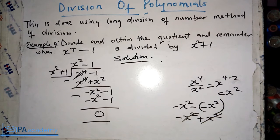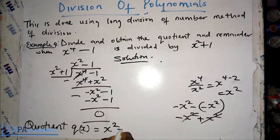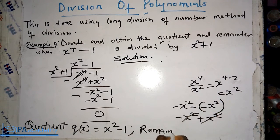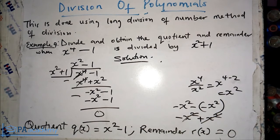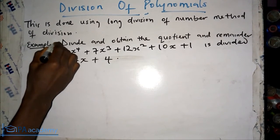For Example 4, our quotient q(x) equals x² minus 1, and our remainder r(x) equals zero. This is a very simple example. Division of polynomials is not something very difficult. We'll look at one more example.